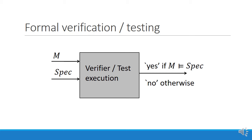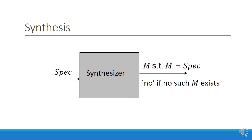Synthesis is different. In synthesis, we have a tool called a synthesizer. The input for the synthesizer is just the specification. If possible, the synthesizer outputs a model or an implementation that satisfies the specification; it outputs no if no such model or implementation exists. So in synthesis, there is no upfront investment in building a model or an implementation which may or may not be correct. In other words, we describe only the what — the how is computed by the synthesizer.